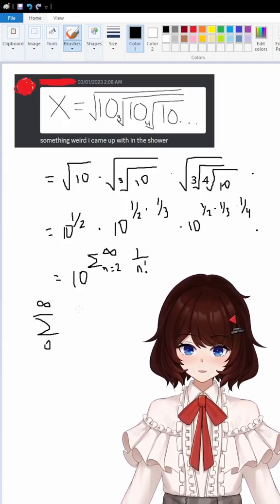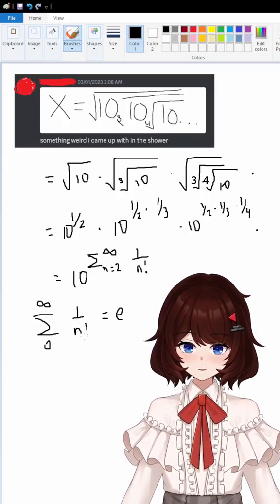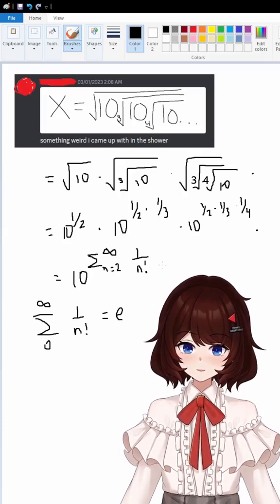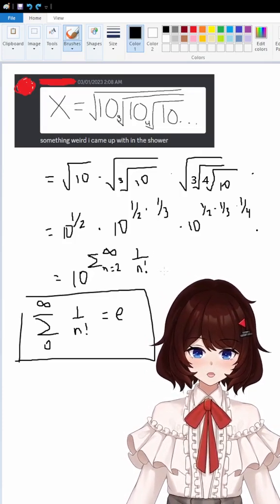The sum from 0 to infinity of 1 over n factorial is equal to e, Euler's number. And here we have the sum from n equals 2 to infinity of 1 over n factorial, so that's really close. So we can simplify our earlier expression to 10 to the power of e minus 2.